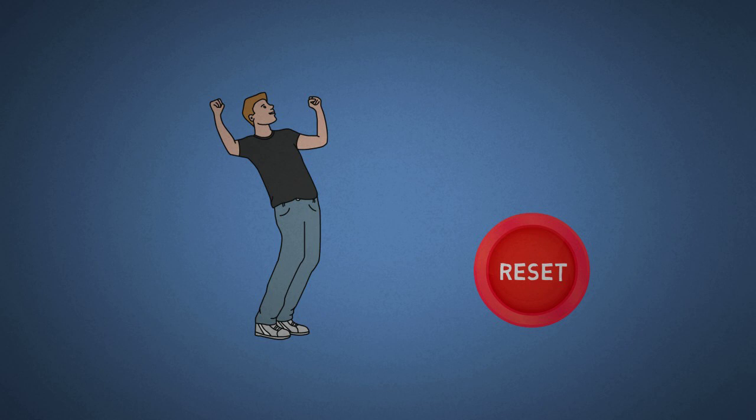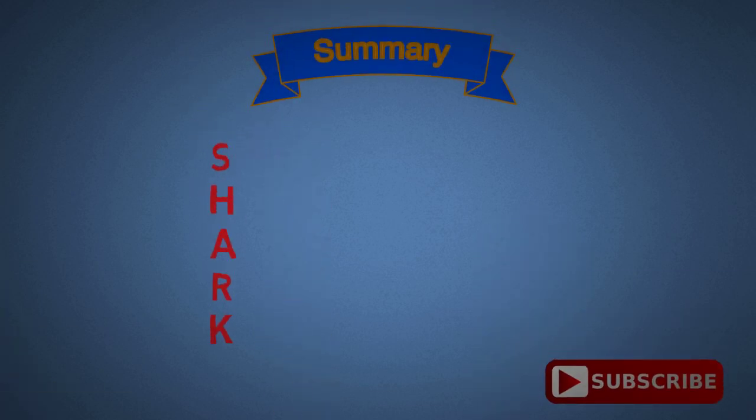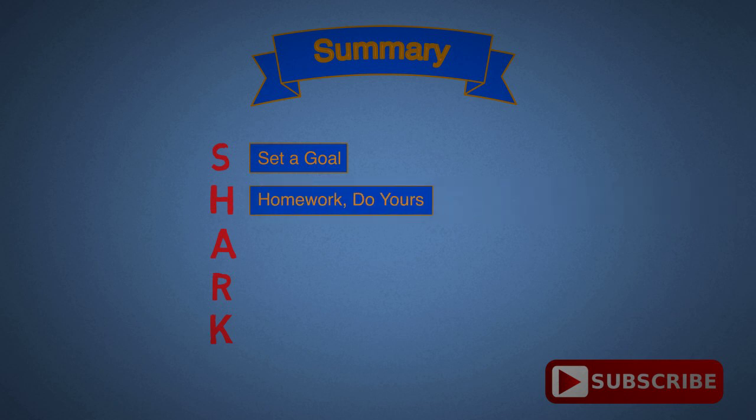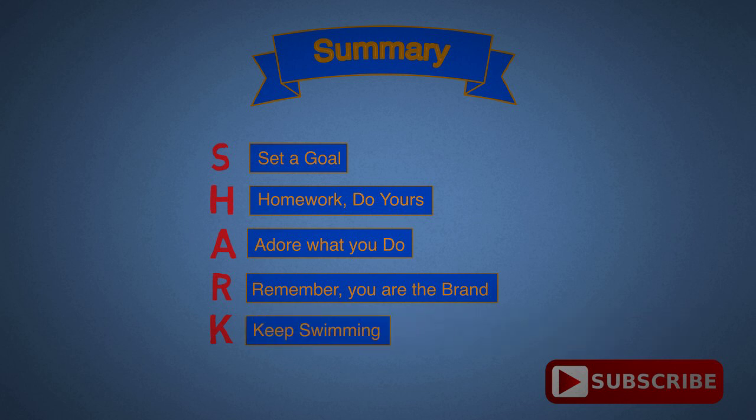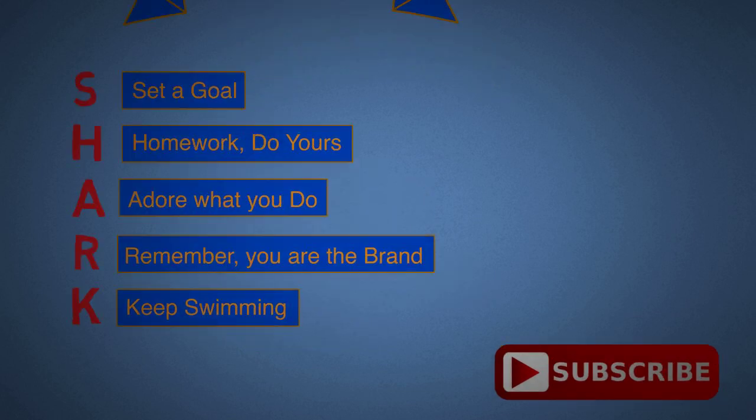To summarize: number one, set a target in sight, and remember it's okay if you have to change targets, but it's important to always have goals and to write them down. Number two, do your homework and research. Those who fail to plan should plan to fail. Number three, adore what you do. The only way to stay motivated in the long run is if you're passionate about what you do. Number four, remember you are the brand. You are what you eat. Number five, keep swimming. Don't give up and get up each time you fall. Lastly, find a way to hardwire these shark points so that they are in the heart of everything that you do.